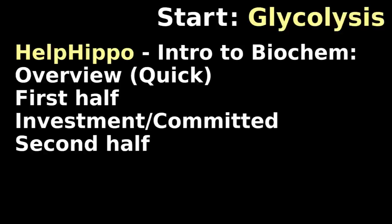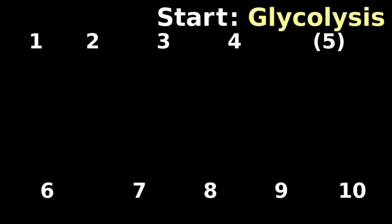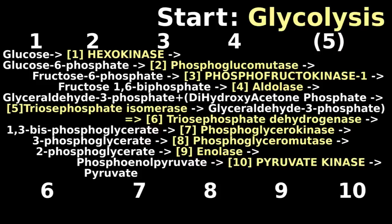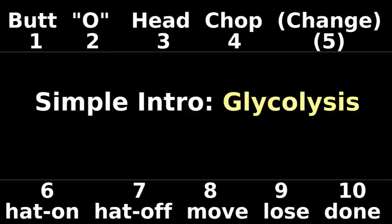In HellPippo's Intro to Biochemistry Metabolism, we said this. There are 10 steps in glycolysis, with long names and much detail. This simplified intro is a start.